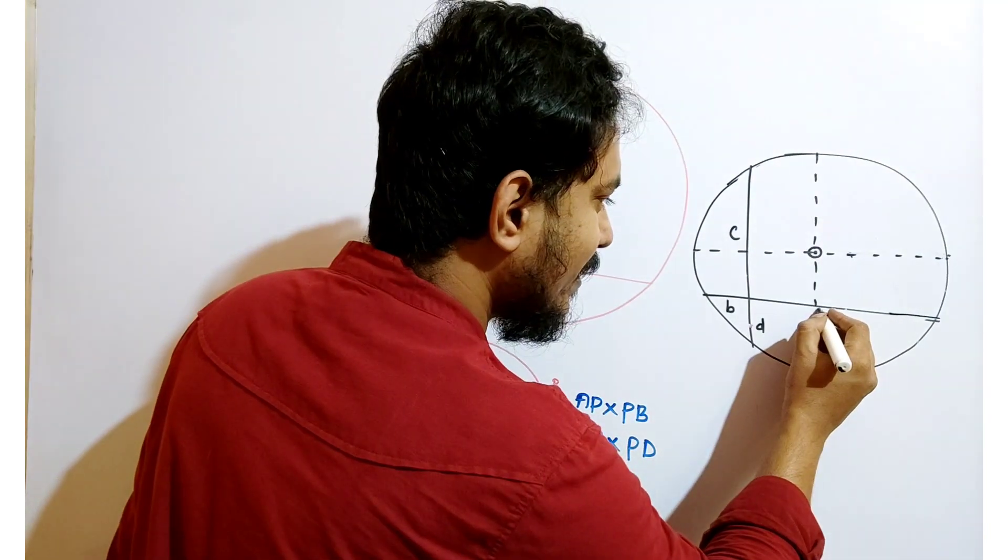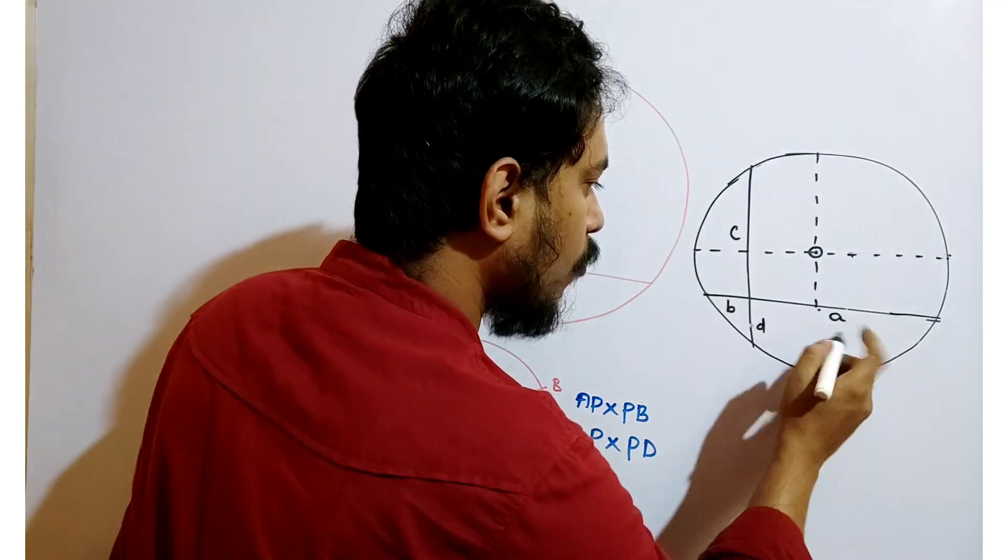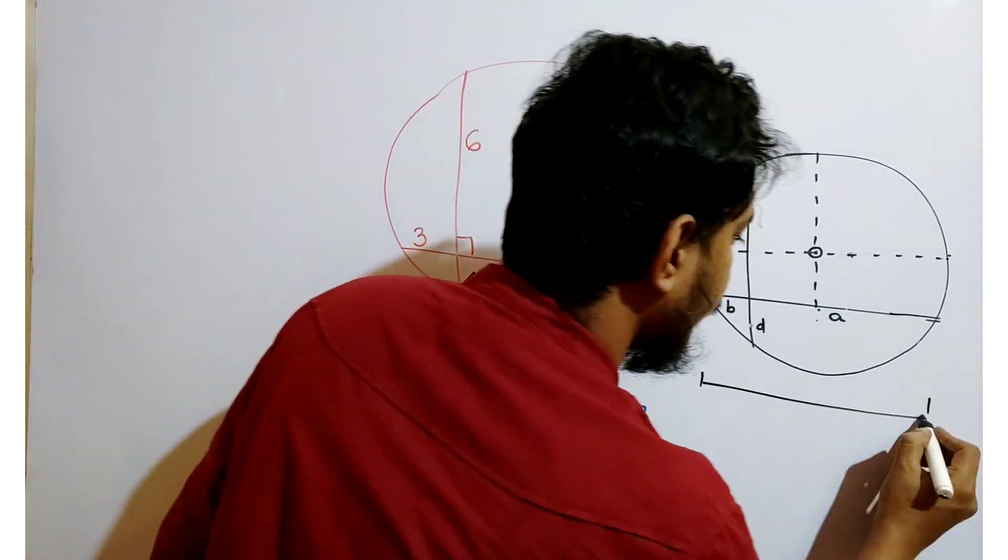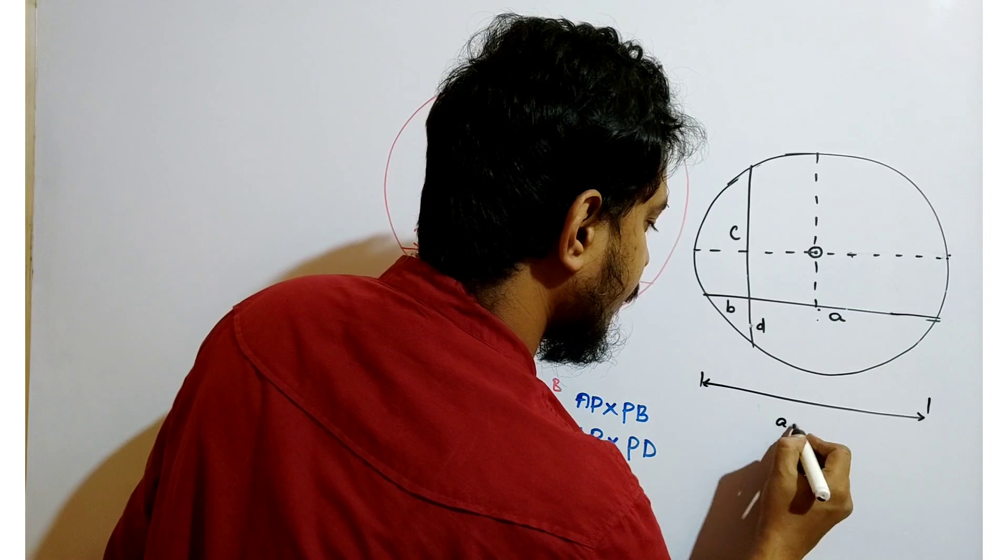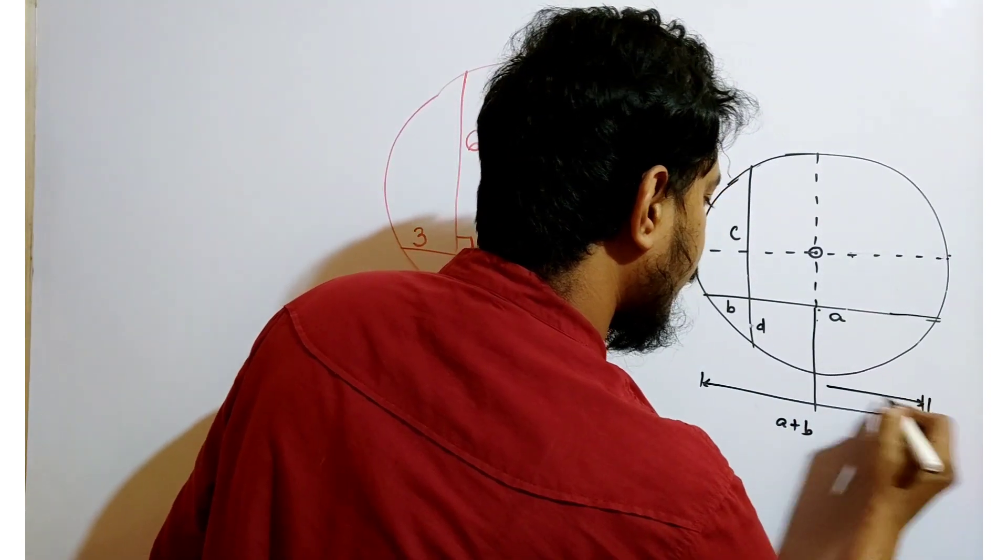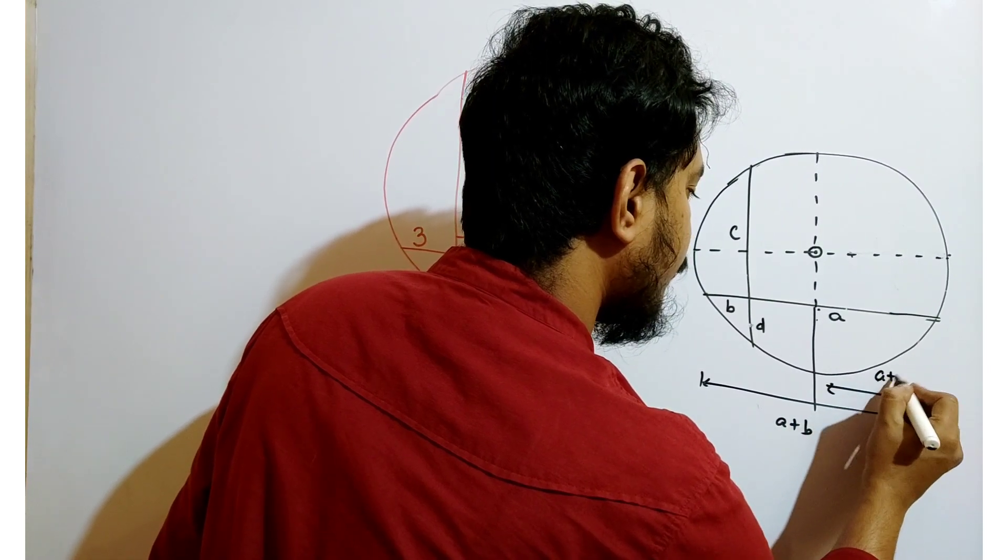Now, this is the midpoint of this chord. So length of this chord is A plus B. So this is the midpoint. So what will be the length of this part? A plus B by 2.